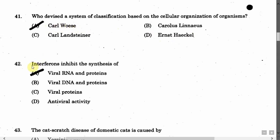The next question is: Interferon inhibits the synthesis of — Option A: Viral RNA and proteins. Option B: Viral DNA and proteins. Option C: Viral proteins. Option D: Antiviral activities. The correct answer is Option A, that is viral RNA and proteins.